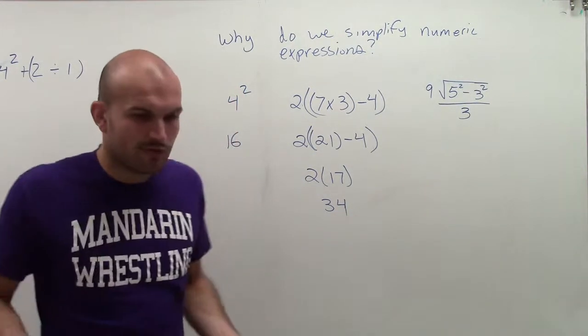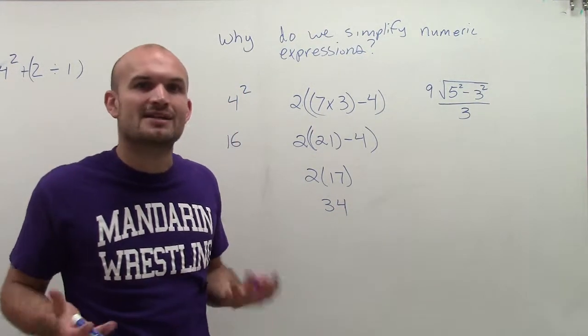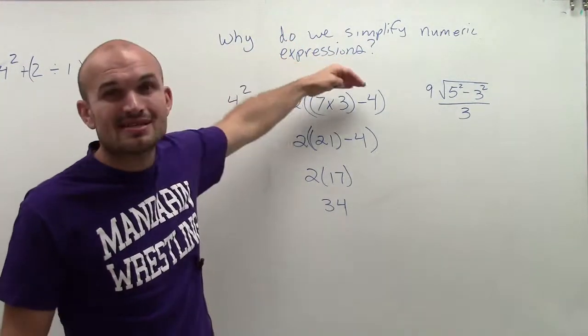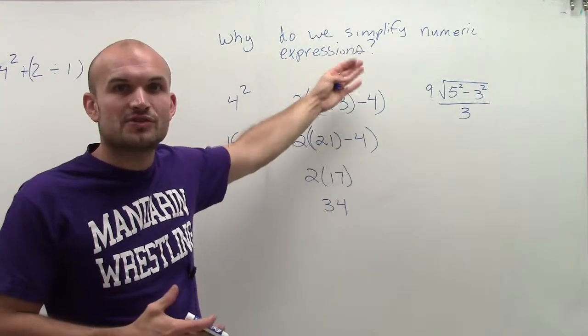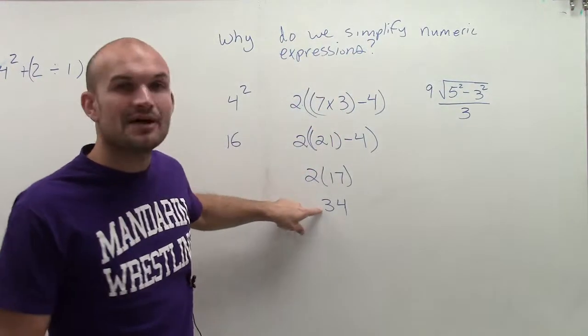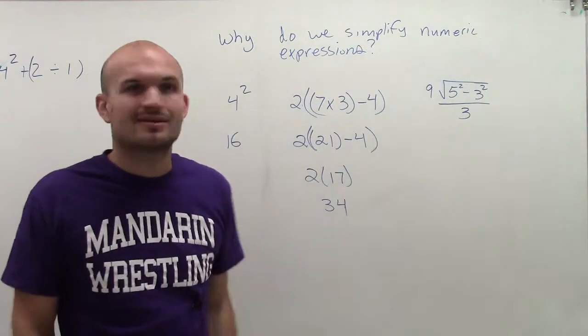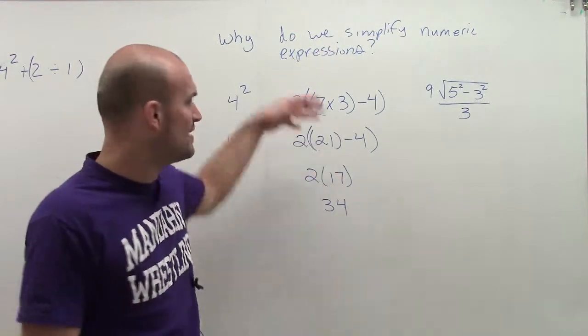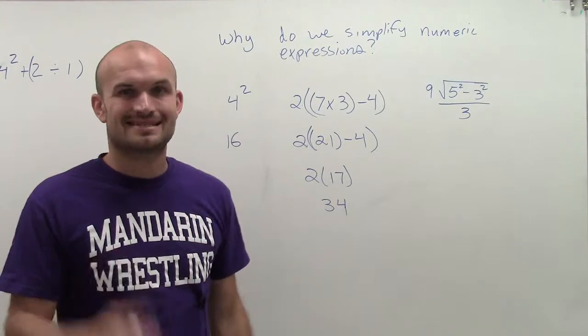So you can see, when you have a numeric expression, we want to simplify it as much as possible. Rather than writing all this, if I notice that I can simplify this, I can reduce it down to smaller terms, then get it down to 34. There's no point in just leaving all that stuff. That's going to make everything you're trying to do confusing. When you have an opportunity to simplify, simplify.